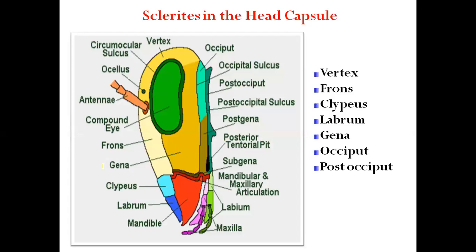The sclerites are very important for understanding the structure of the head in exams. These sclerites are very thick cutaneous plates, and collectively they form the exoskeleton. The insect head is made up of various cephalic sclerites.